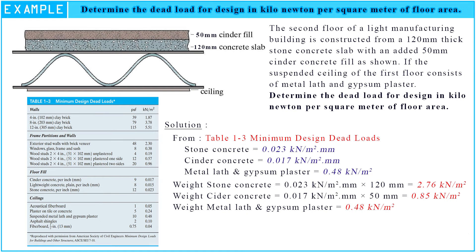After we know the dead loads of each material, we can find the total dead load of our slab. Therefore, the answer is 4.09 kN per square meter.